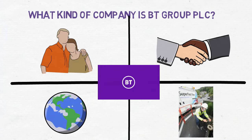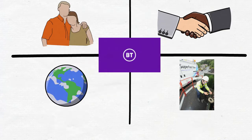The consumer segment offers mobile, broadband, home phone and TV services. The enterprise segment sells communications and IT services to businesses and public sector organizations. The global services segment offers enterprise communication services. And the open reach segment builds and operates the fixed network that connects homes and businesses together.